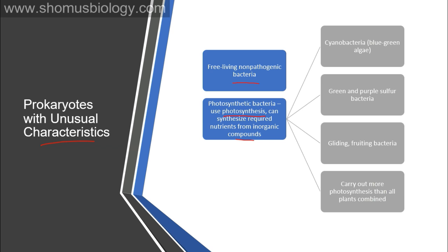An example of photosynthetic bacteria is cyanobacteria, also called blue-green algae — generally aquatic and able to harvest sun energy. Then there are green sulfur, purple sulfur, gliding and fruiting bacteria. Together, these bacteria carry out more photosynthesis than all plants combined. They have unique electron transport chains involved in energy production, harvesting photon energy to produce chemical energy for growth and metabolism.